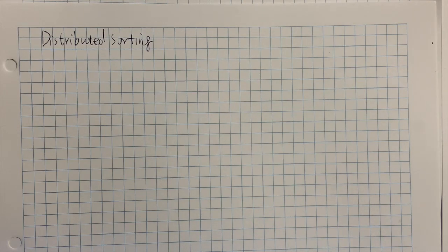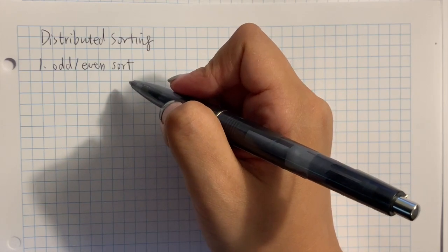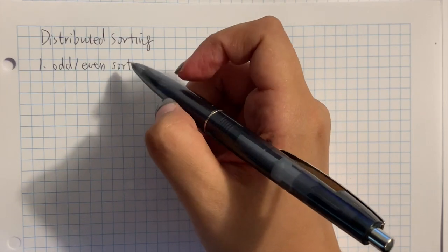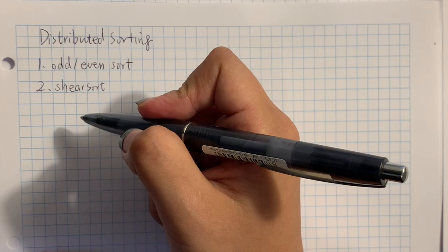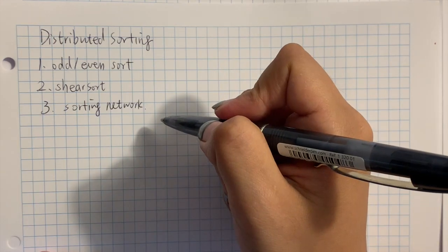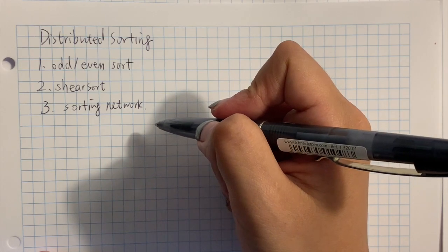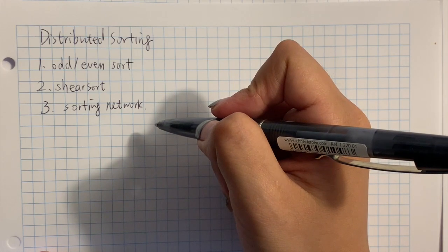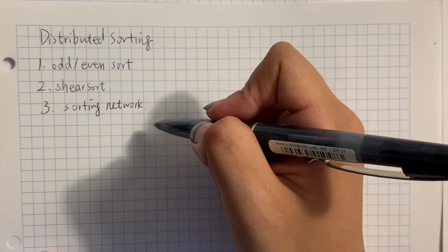Hello. Today I'm going to talk about distributed sorting. First, we're going to discuss the odd-even sort. Second, we're going to discuss shear sort, which is an extension of odd-even sort and is faster than the odd-even sort. And the third part, we're going to discuss sorting network, which is even faster.